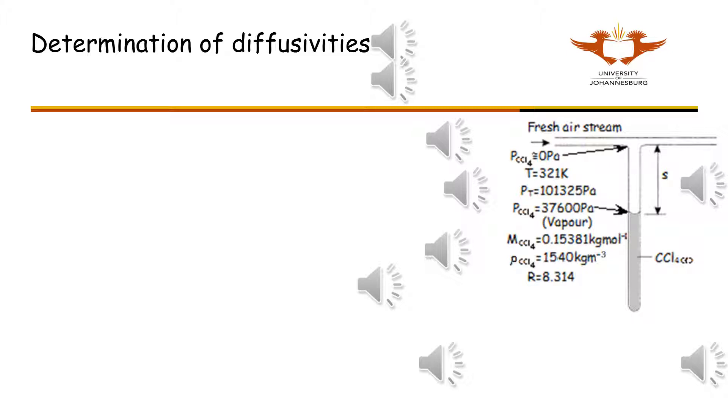Furthermore, due to the flow of air at the top acting as a sink for the carbon tetrachloride, the partial pressure of carbon tetrachloride at the top is zero pascals. In the vertical tube, the air is stationary while the carbon tetrachloride diffuses upwards through this stationary air.